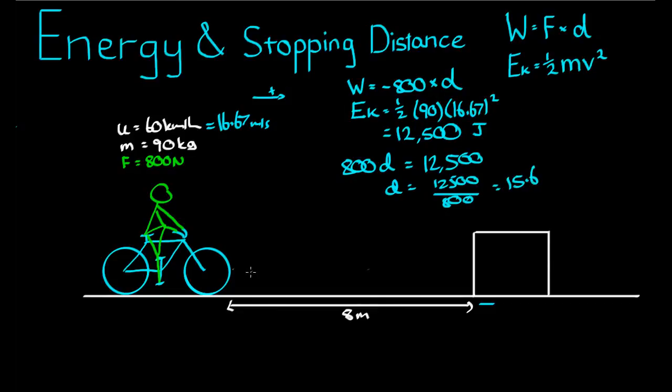So it will take way more than 8 meters for that bike to come to a stop if it was traveling at 16.67 meters per second at the beginning. Let's find now the velocity of the bike at the moment of impact.